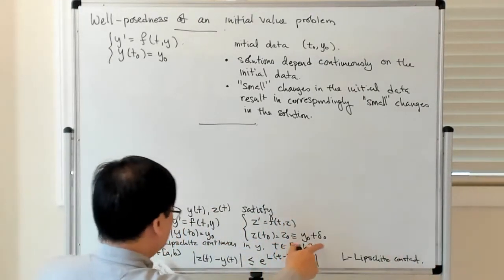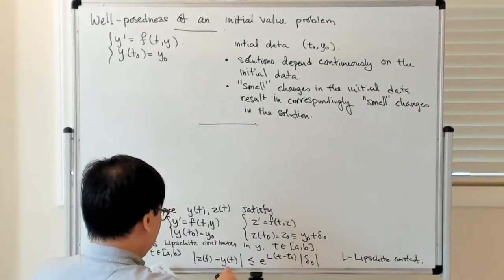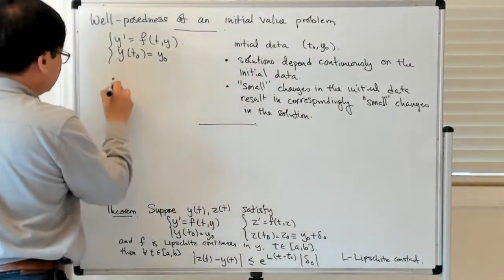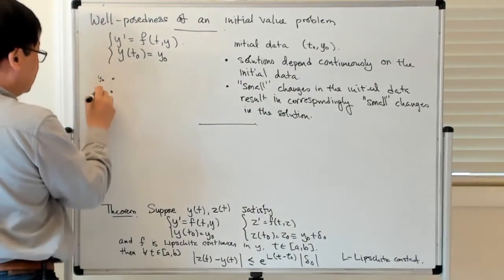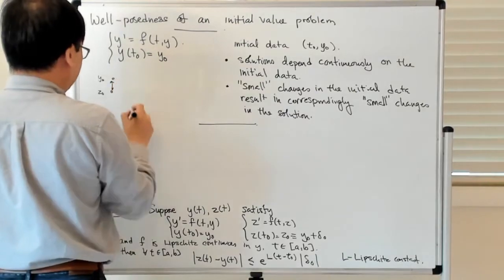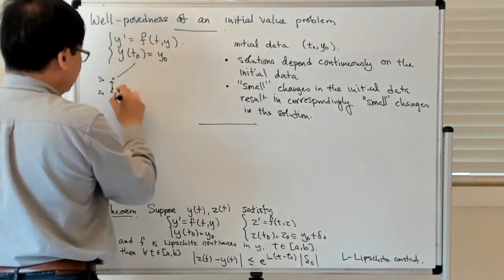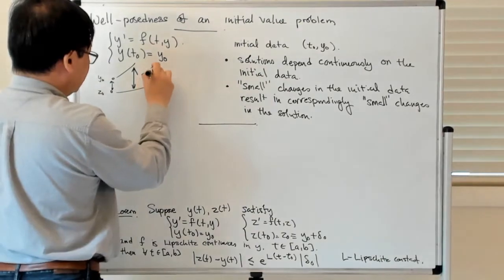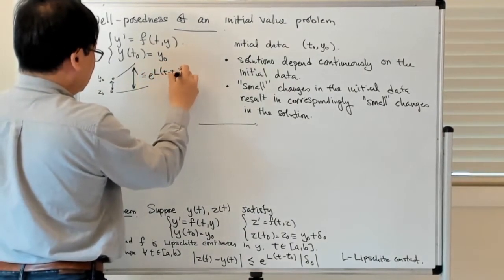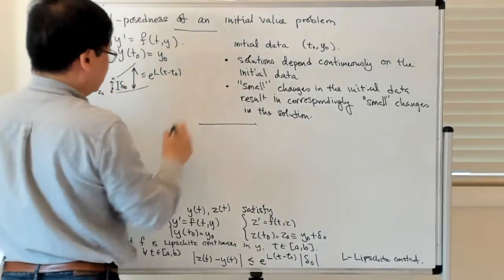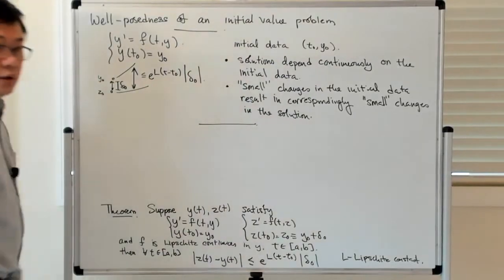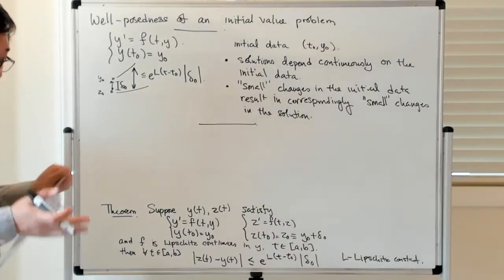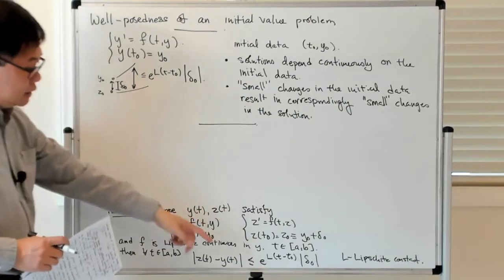What this is saying is that if there's a slight change in the initial data, then the difference between the two nearby solutions — at y₀ and z₀ at the initial time — that error can only grow so fast. It is bounded from above by e^(L(t − t₀)) times the initial gap δ₀. Small changes stay small, with a growth rate that depends exponentially on the Lipschitz constant.